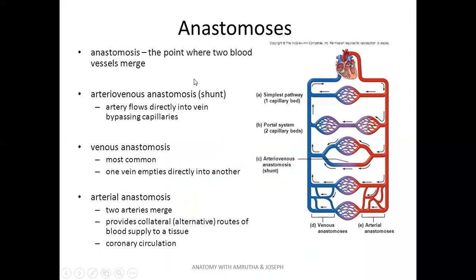Anastomosis is the point where two blood vessels merge with each other. There are three types: arterial anastomosis, venous anastomosis, and arteriovenous anastomosis. In arterial anastomosis, arteries merge with each other before forming capillaries. In venous anastomosis, veins join with each other after formation of capillaries. In arteriovenous anastomosis, arteries bypass the capillaries and join directly with veins — these are also called shunts.